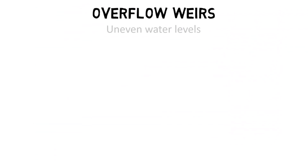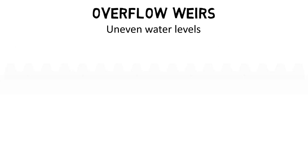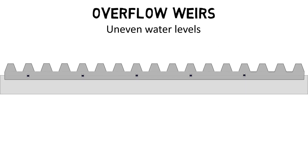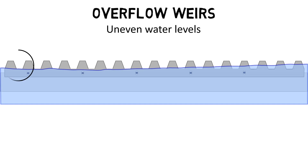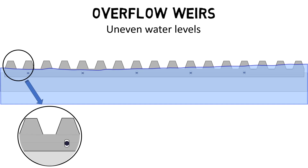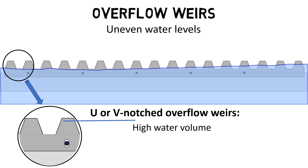The water level in clarifiers is never completely even, but at the same time the overflow of water over the effluent launder edges must be uniform. To balance out the differences in the water level, effluent launders are usually equipped with a V or U notched overflow weir. The V or U notched weir regulates the overflow water amount and therefore accounts for uneven water levels in the clarifier basin.